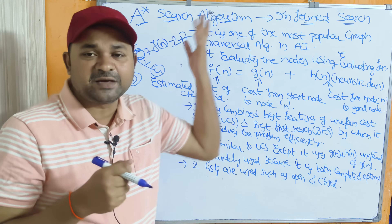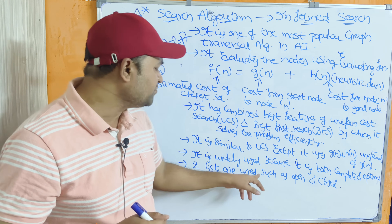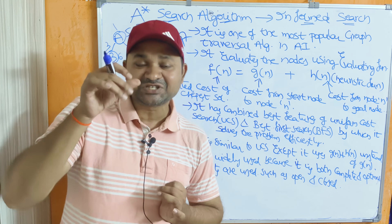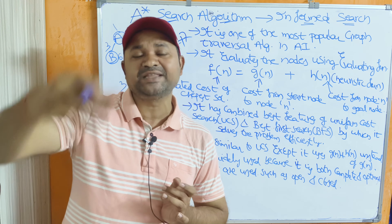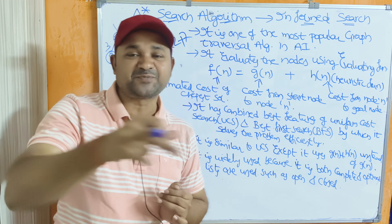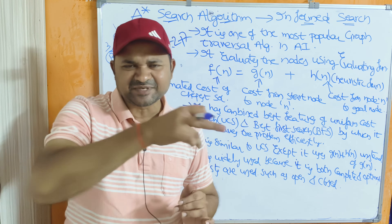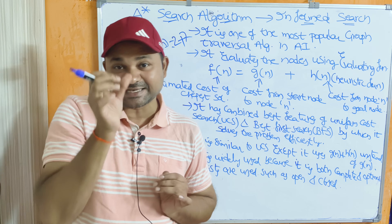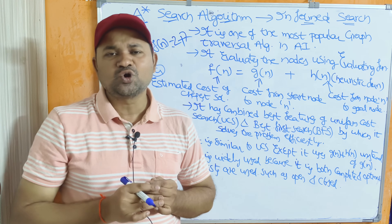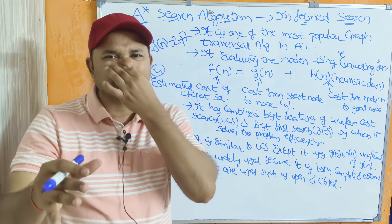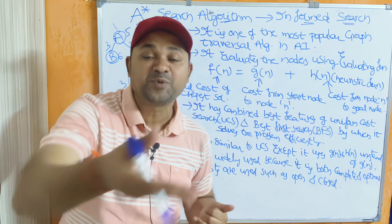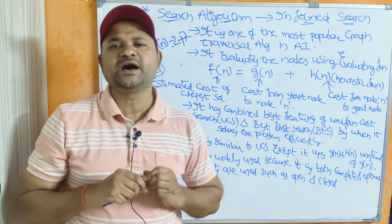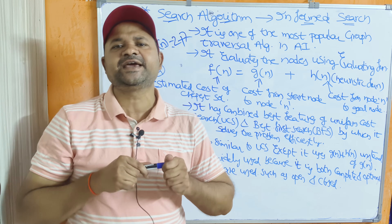In A* search algorithm, just like best-first search, we use two lists: open and closed. The open list contains nodes that are to be explored in the future — whenever a node is explored, its successors are placed in the open list. The closed list contains nodes which were already explored. Explored nodes are placed in the closed list.